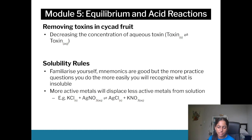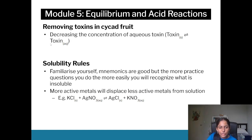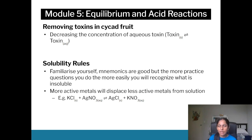In terms of how Indigenous Australians used solubility equilibria, a prime example is the cycad fruit. What they would do is remove the outer flesh, crush it, and pour boiling water over it. The toxin, thicacin, goes from solid to aqueous. They would then remove the remaining solution, and what's left is the detoxified cycad fruit.